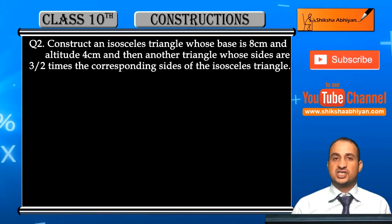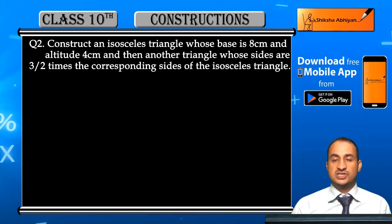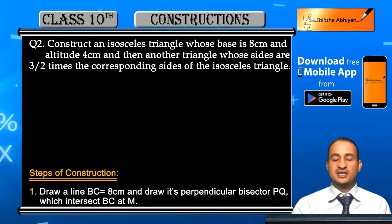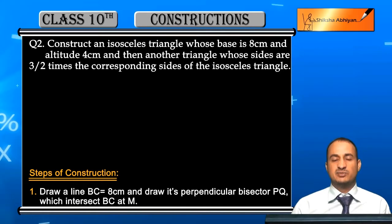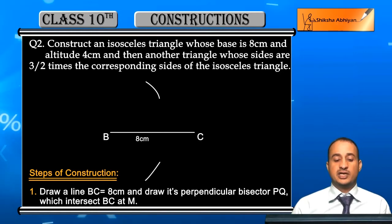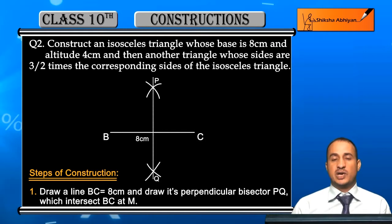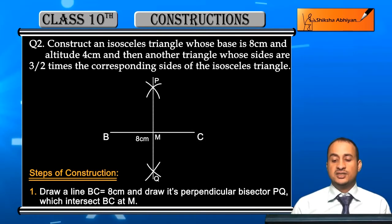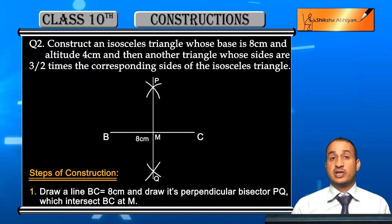Now students, let us start the steps of construction. First, draw line BC equal to 8 centimeters. Draw an 8 centimeter line BC. Then draw its perpendicular bisector PQ, which intersects BC at point M. We do this because the altitude of an isosceles triangle is the perpendicular bisector of its base.